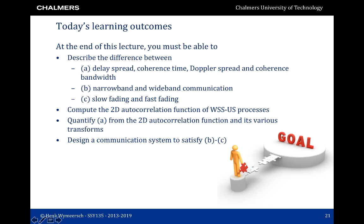This is the end of the lecture. We have seen how to describe the difference between delay spread, coherence time, Doppler spread, and coherence bandwidth, between narrowband and wideband communication, and between slow and fast fading. We've computed 2D autocorrelation functions of wide-sense stationary uncorrelated scattering processes, quantified the four main channel properties from those autocorrelation functions and their transforms, and discussed how to design communication systems to be narrowband or wideband, or operating under slow or fast fading.